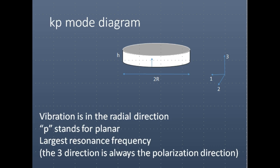The KP mode is similar to the K31 mode, and because of the radial shape, it's going to be a disc type shape of the material, whose diameter is two times the radius, whose height is H, and the polar radius is in the thickness.